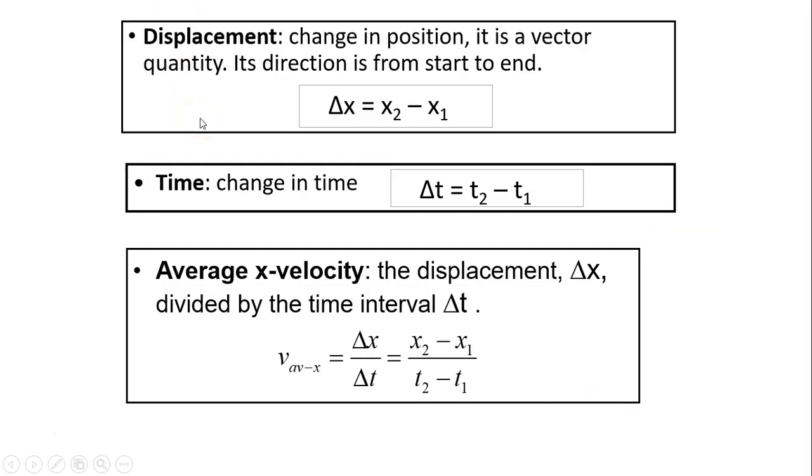So there are three vocabularies to describe motion. Displacement, changing position, time is really the time interval, and finally average velocity in the x direction. Later on, we're going to figure out average velocity in the y or z direction. But so far in one dimension, we're only interested in x direction.